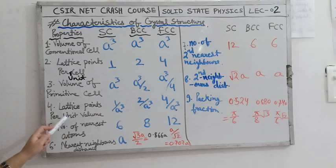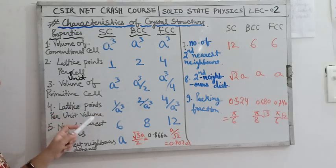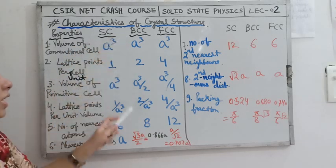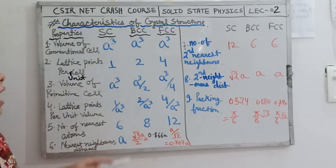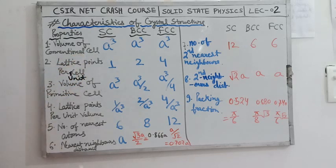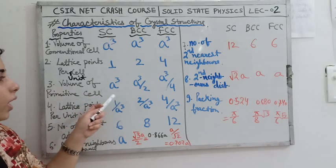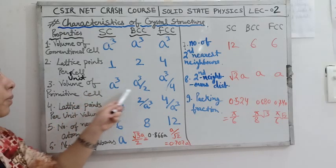Next is lattice points per unit volume. For simple cubic it is 1 upon A cube, for body centered cubic it is 2 upon A cube, and for face centered cubic it is 4 upon A cube. This is the reciprocal of the volume of the primitive cell, and lattice points per unit volume is the reciprocal of the volume of the primitive cell. You need to remember these values.